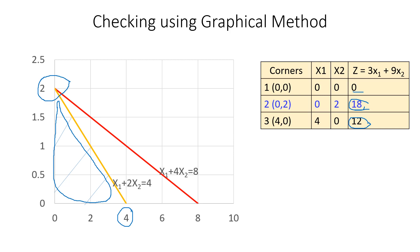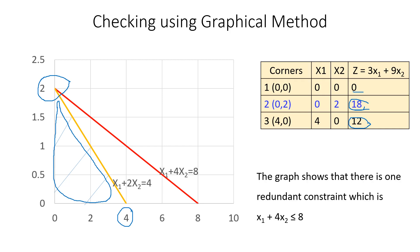From the graph, one application of degeneracy is that it indicates there is a redundant constraint. As seen in the graph, the redundant constraint is x1 + 4x2 ≤ 8. This constraint is redundant because if we remove it, it does not affect the feasible solution space — we can remove redundant constraints without changing the feasible region.